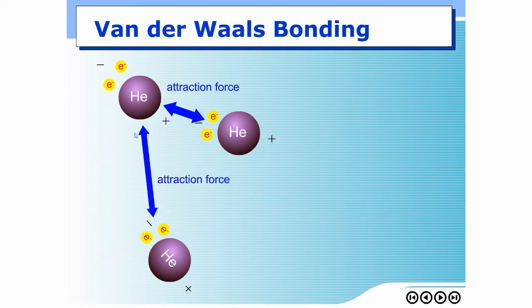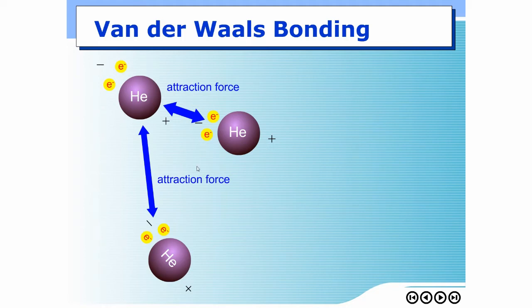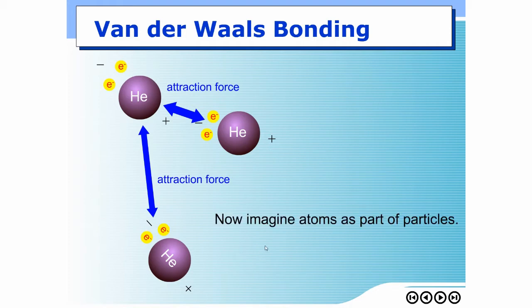For the next moment in time, electrons on each atom would move away somewhere else, and the charge distribution within an atom would be different. So the attraction in this picture would change with respect to time. Now, if you understand attraction by van der Waals force like in this picture — where we describe attraction from atoms — you have to imagine these atoms as part of a solid particle.